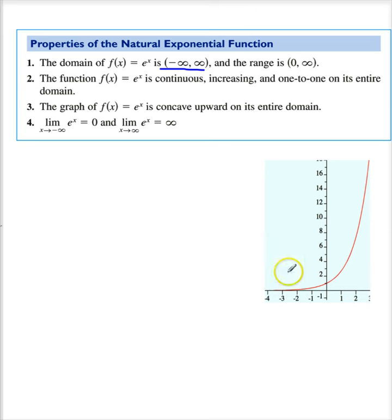If I take the limit as x goes to infinity of e to the x, it goes to positive infinity. It shoots right on up. If I take the limit as x goes to negative infinity, e to the x goes to 0.